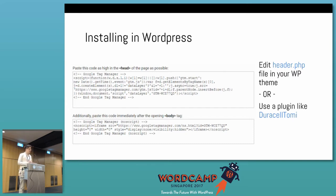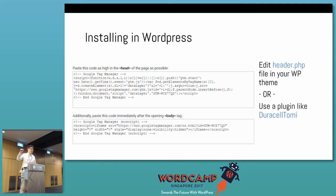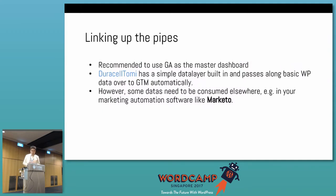We like DuracellTomi because it already starts talking via GTM and pushes basic WordPress information — custom data like post dates, page dates, page author, any custom fields — straight to Analytics. In your Analytics dashboard you can then filter by content author, and those are also Facebook parameters you can use to view inside Analytics itself.